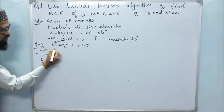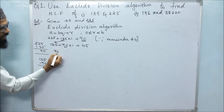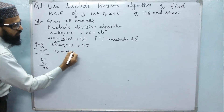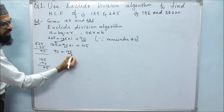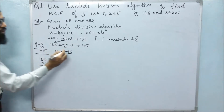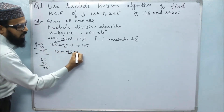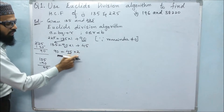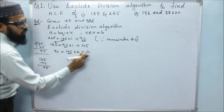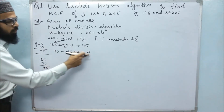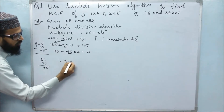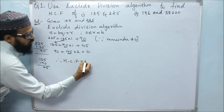Next, 90 comes in place of A and 45 comes in place of B. If we multiply 45 with 2, we get 90. So the quotient is 2, and 90 minus 90 is 0. The remainder is 0, so the procedure stops. Therefore, the HCF is 45.